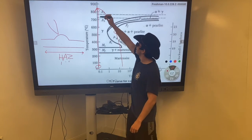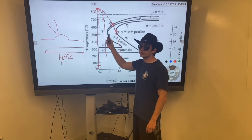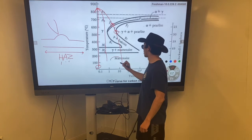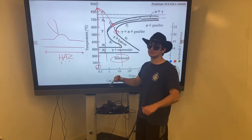Now, if we were to have it quench faster, it can clear the nose here and form martensite. Martensite is brittle. This is bad.